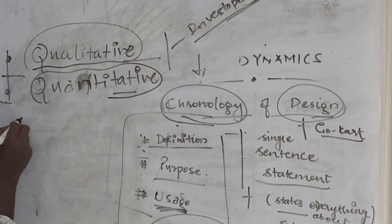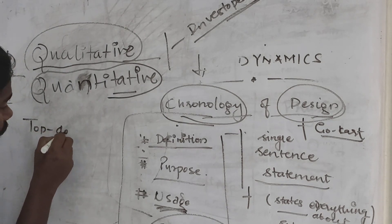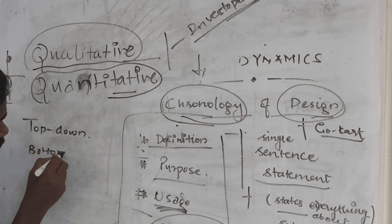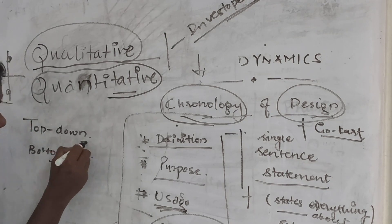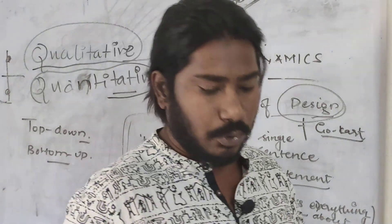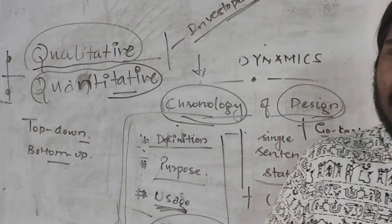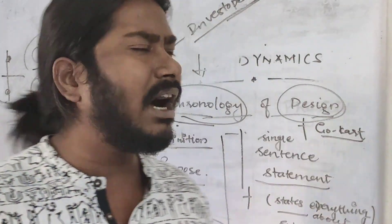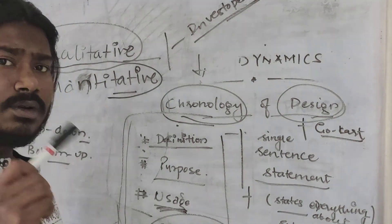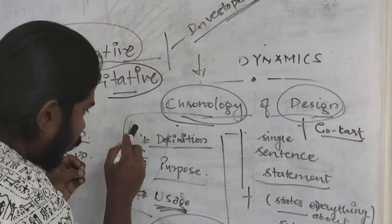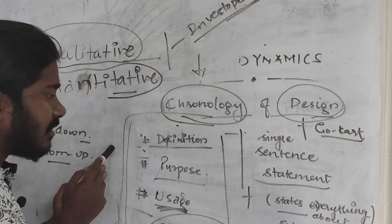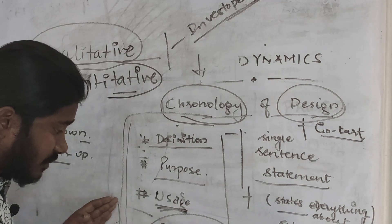Around these two terms, there is top-down and bottom-up approach. This chronology is the top-down approach. When I say that you have to design a race car, just to design the best possible product, you went down in this manner: the definition — you clearly state it — the definition, the purpose, the usage.